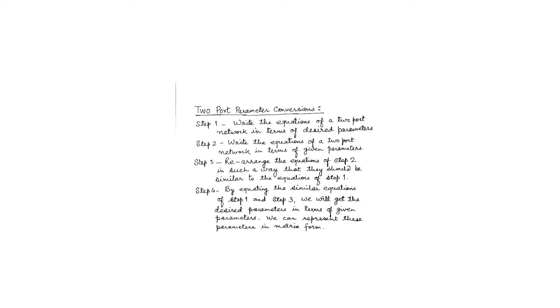Step 3: we take the equations written in Step 2 for the given parameters and rearrange them in such a way that they become similar in form to the equations of Step 1. Step 4: by equating the similar equations of Step 1 and Step 3, we will get the desired parameters in terms of the given parameters. We can represent these parameters in matrix form.